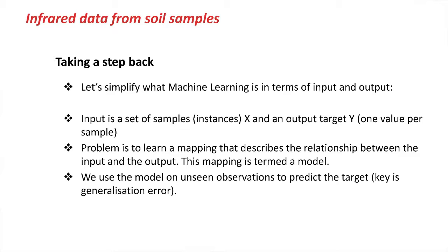That property could be organic carbon, organic nitrogen, available nitrogen, or potassium — something we're interested in predicting from the input. Our problem is to learn a mapping that describes the relationship between the input and the output, and we refer to this mapping as a model. We build the model on our training data and then use it on unseen observations — new soil — applying the model to predict the target soil property, such as organic carbon.